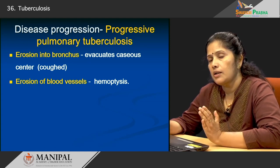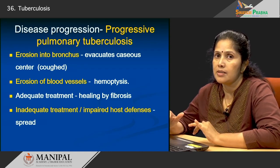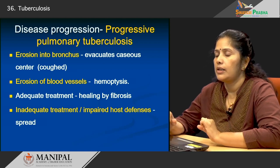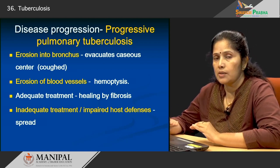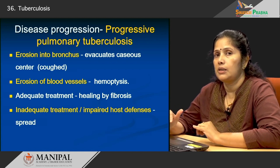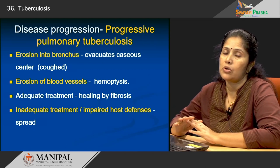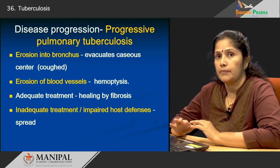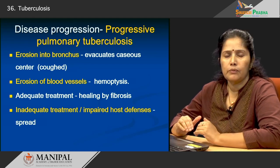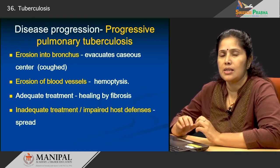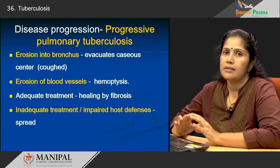How does the disease progress? Progression is more common in the elderly and immunocompromised. Extension of the local lesion with caseation can occur, and from there the lesion can extend into the bronchus as the patient coughs out the caseous material. If a patient has received adequate treatment and completes it, the entire lesion will heal by fibrosis. However, if the patient does not take complete treatment or is immunosuppressed, the disease can spread.